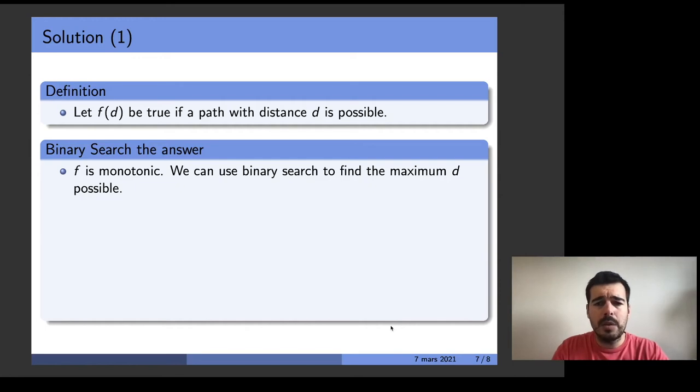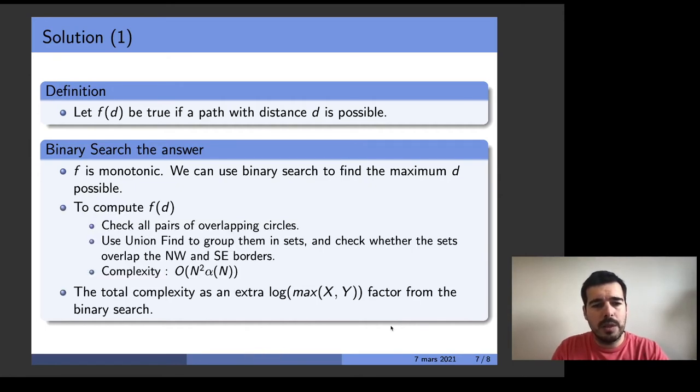So we can use binary search to find the maximum possible distance. To compute f of t we can go through all pairs of circles and check if they overlap. If they do we group them using union find and check if they exceed both northwest and southeast borders. This approach takes n squared alpha n and there is also an extra log factor because of the binary search. This would be fast enough for this problem.